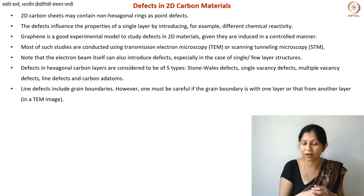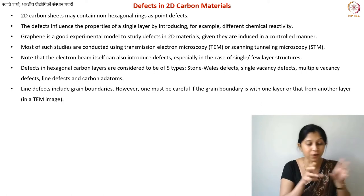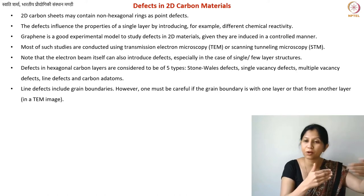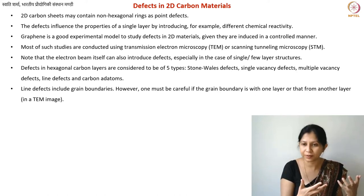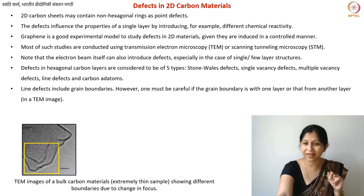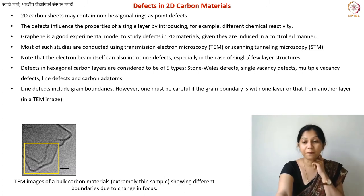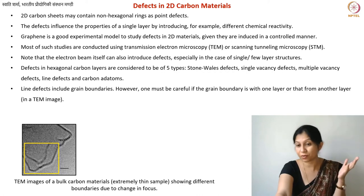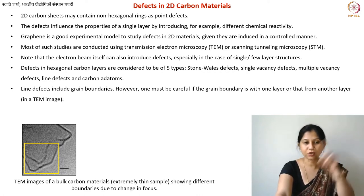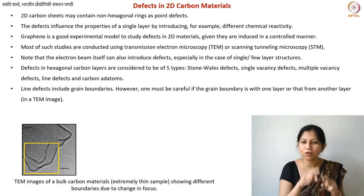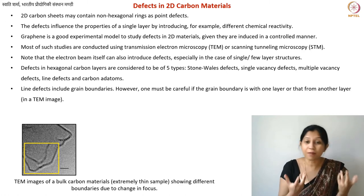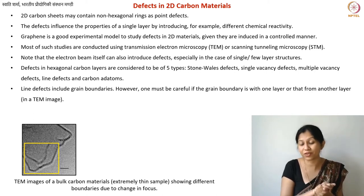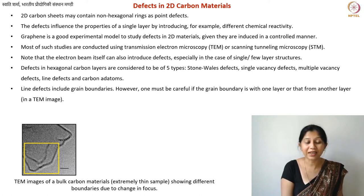One problem with TEM imaging is that you may end up introducing defects. Another problem is that TEM images are 2D projections of a 3D material. For example, if you have 10 sheets of graphene within your focal plane, all of them will be projected together and you will not be able to get any depth perception. So what often happens is that when you see a structure — for example, in an image from carbonizing a phenol — you might identify a grain boundary or dislocation in a yellow-boxed region.